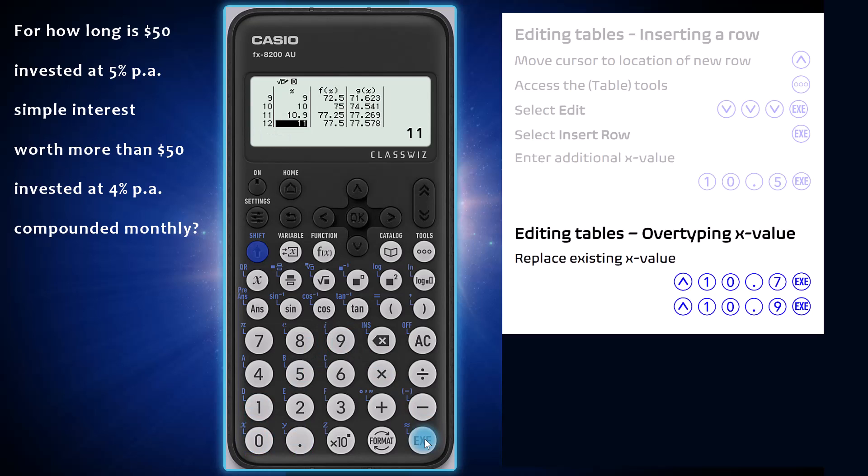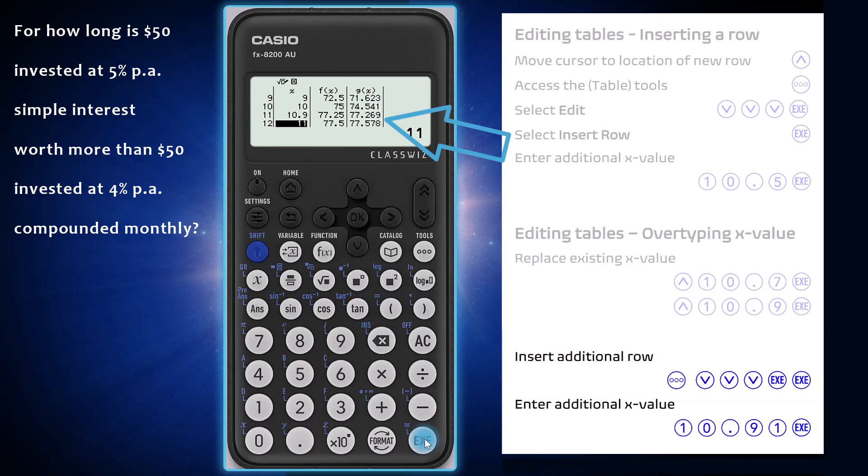It appears that the value we are looking for lies between 10.9 and 11. To find it to a second decimal place, I'm going to insert another row in between 10.9 and 11. Not quite there. I'll over type now to 10.92. 10.92 represents the time in years when the simple interest investment is worth less than the compound interest investment, bound to two decimal places.